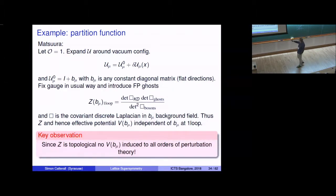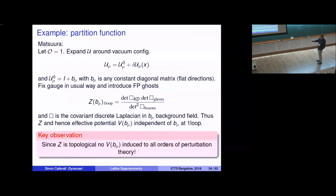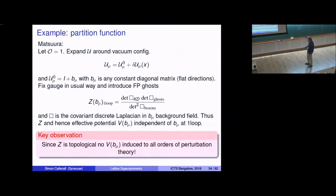The exact lattice supersymmetry enforces that Z, as a function of the background, equals one — it has no background dependence at one loop. So the effective potential V(B) is independent of B at one loop. By the earlier t-independence argument, the one-loop result is exact to all orders in perturbation theory. We've proven that the effective potential is zero to all orders of perturbation theory — the moduli space is not lifted in perturbation theory. The flat directions survive quantum corrections in any theory with this sort of Q-exact structure.